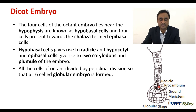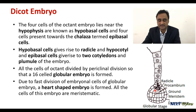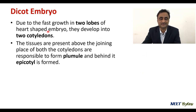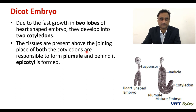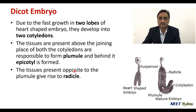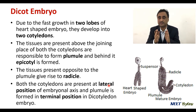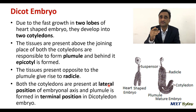All cells of the octant divide by periclinal division, eventually forming a 16-cell globular embryo. This globular stage then develops into a heart-shaped structure, and all cells of this heart-shaped structure are meristematic, so they have the capacity to divide. Due to growth, the two lobes of the heart-shaped structure develop into the two cotyledons. The tissue above the joining place of both cotyledons forms the plumule, with the epicotyledon behind it, and the tissue opposite the plumule gives rise to the radicle.